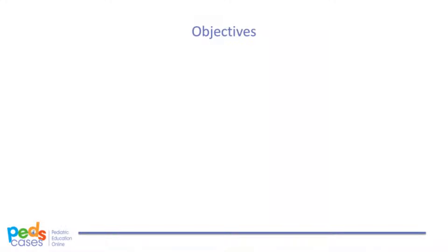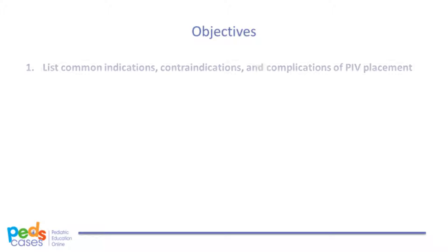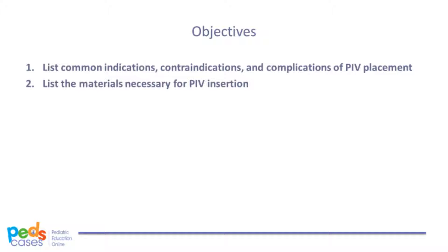By the end of this podcast and instructional video, the listener will be able to: list common indications, contraindications, and complications of PIV placement; list the materials necessary for peripheral IV insertion; and list the procedural steps of peripheral IV establishment.